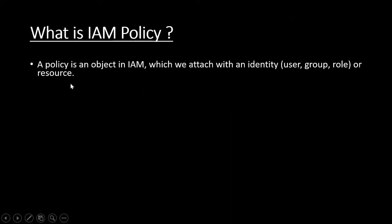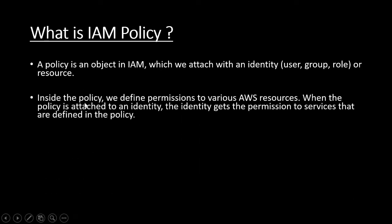What is IAM policy? A policy is an object in IAM which we attach with an identity — like a user, group, role, or a resource. An IAM policy is an important concept in AWS which we use a lot almost everywhere. Inside the policy, we define permissions to various AWS resources.